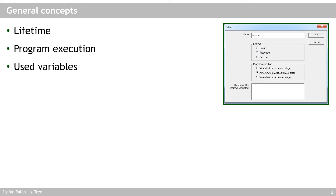The second type of table has a lifetime of 'treatment.' This means that for as long as the current treatment's .stt file is running, this table will retain the information saved in it. So if you move to the next period, the table is not deleted — it retains all the information from the past. This is often used within a treatment to transfer information from one period to the next, or to give subjects an overview of their decision history.